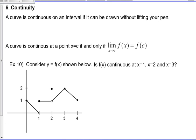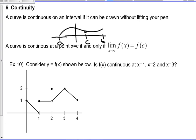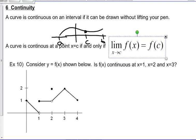Moving on to Section 2.3: Continuity. A curve is continuous on an interval if it can be drawn without lifting your pen. It's continuous at some point c if the actual value of the function at c is the same as the limit. So the limit and the actual point have to be the same for a curve to be continuous at a point.